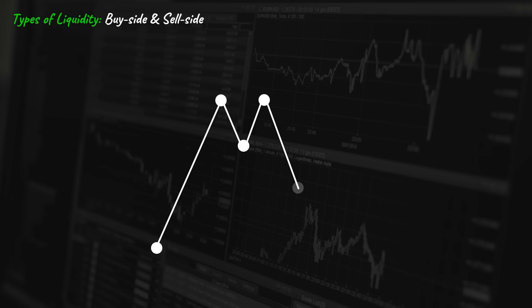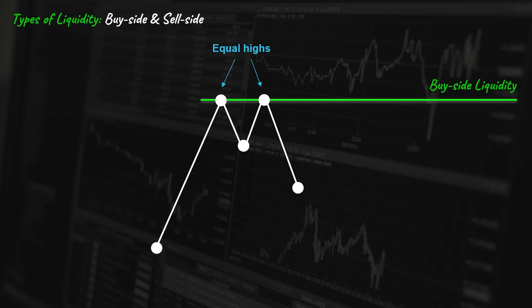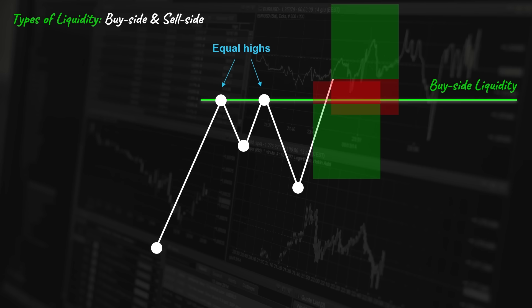There are two types of liquidity in the market: buy-side and sell-side. Liquidity above a high or a group of highs represents buy-side liquidity. When the price approaches this level, the bearish traders will go short or they will protect their previously opened short positions. On the other hand, the breakout traders will go long if the price breaks through this level. The animated movement aimed to grab this liquidity is called the buy-side delivery — it's running high to engage the liquidity above these relative equal highs. The algorithmic price delivery has engaged the liquidity by trapping traders on both sides, and then the smart money would go short.